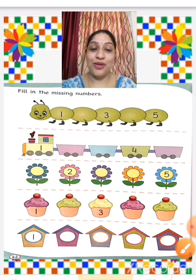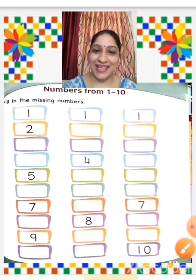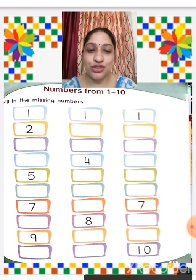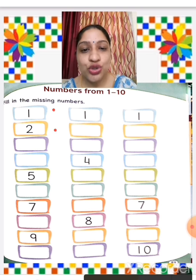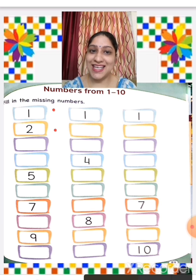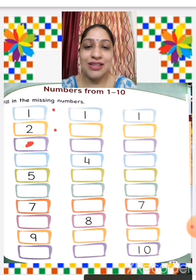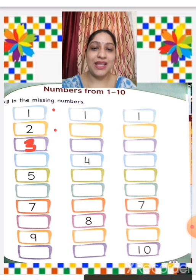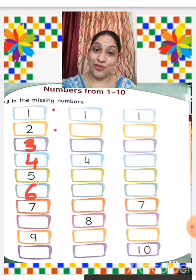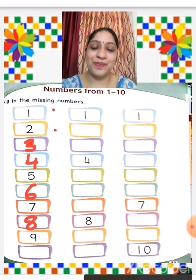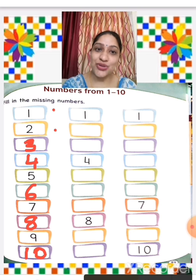Now we will see one more worksheet — missing numbers from 1 to 10. 1 is written, 2 is written, 3 is missing — we write 3. Then 4. 5 is written, 6 is missing — we write 6. 7 is written, 8 is missing — we write 8. 9 is written, and 10 is missing — we write 10. Now this row is complete.